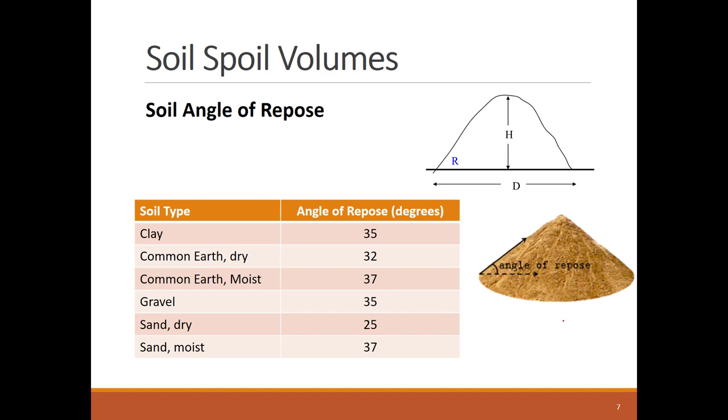Angle of repose is unique for each soil type and represents the natural stable slope of the soil pile. The shown table lists angles for different soil types. You can see that the more moist the soil is, the more angle of repose it will have. Also, you can see that dry sand has the lowest angle of repose, which I'm sure you struggle with when building sand castles on the beach.